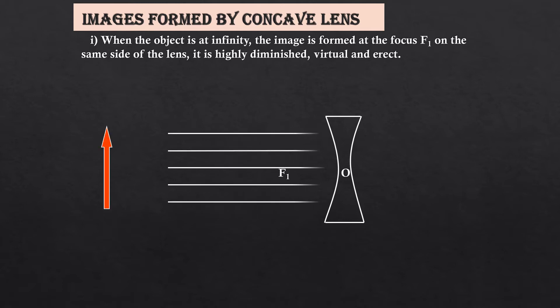Let us see the first ray diagram where object is at infinity. The rays from the object fall on to the concave lens and they diverge. The image is formed at focus F1 on the same side of the lens. If you extend the diverging rays backward, the image is highly diminished or point sized. It is virtual and erect.